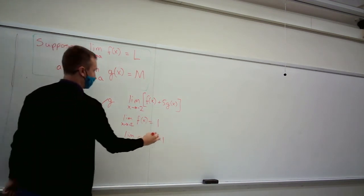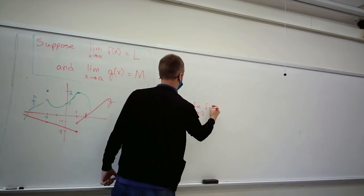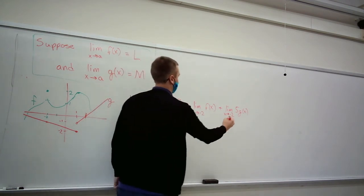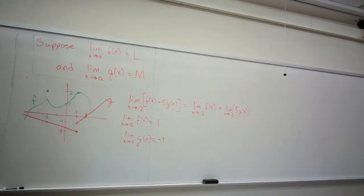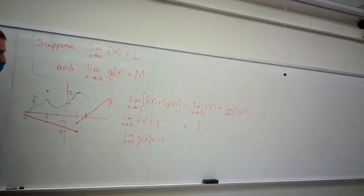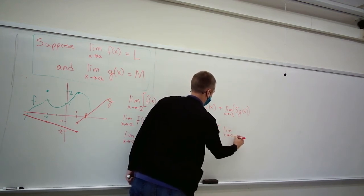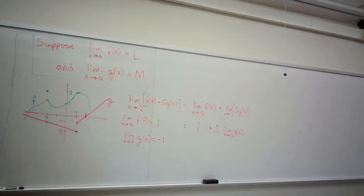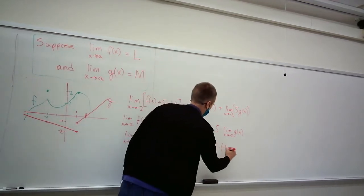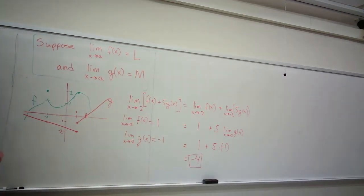We have a sum, so we can rewrite it as individual limits: limit of f plus 5 times limit of g. The limit of f at negative 2 is 1. We know the limit of g exists so we factor out the 5: 1 plus 5 times negative 1, which is 1 minus 5, which is negative 4.